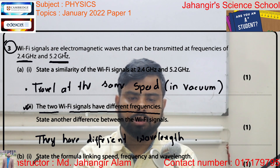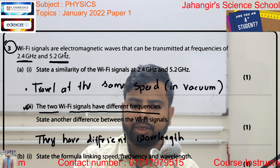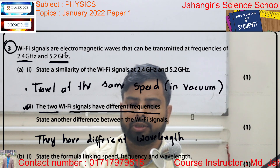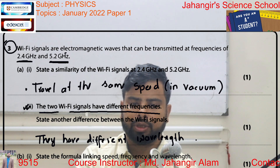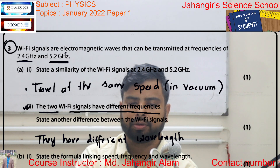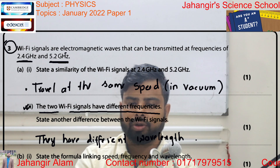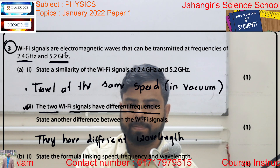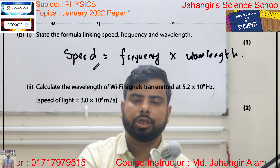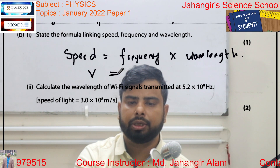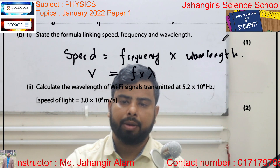Question B: state the formula linking speed, frequency, and wavelength. We know speed equals frequency into wavelength. In symbolic form: v equals f into lambda. v = f × λ is the relation.